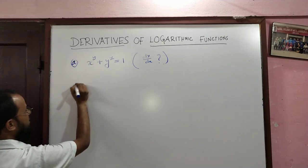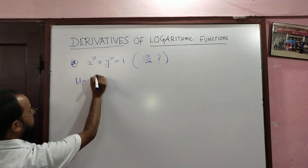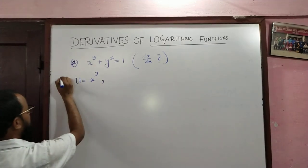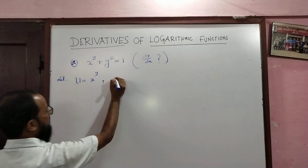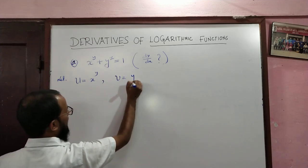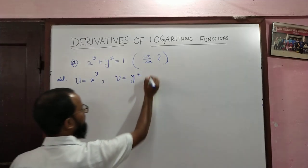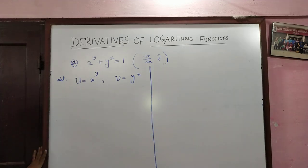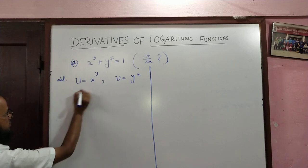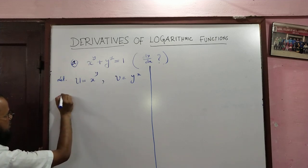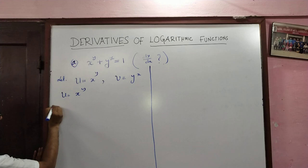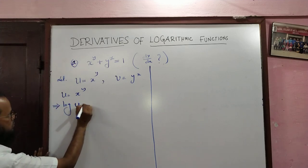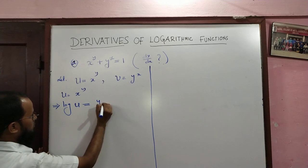First, we take u equal to x to the power y, and y to the power x is taken as v. Taking logarithm on both sides of u equals x to the power y, we have log u equal to y times log x.